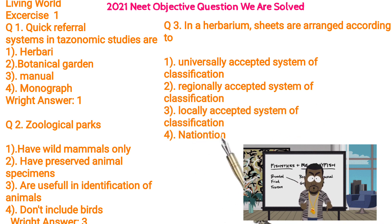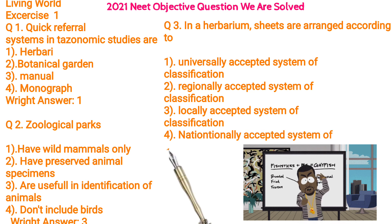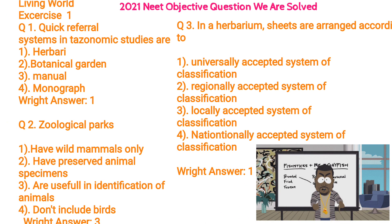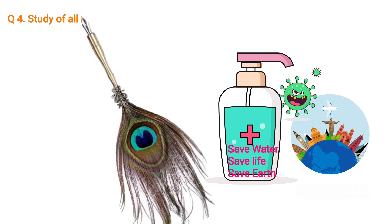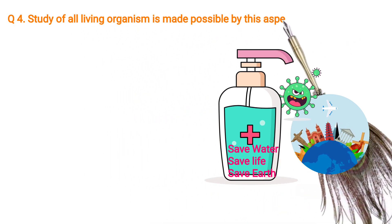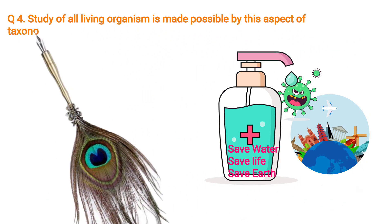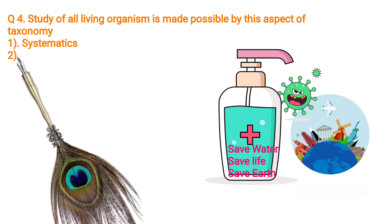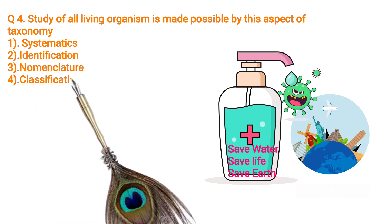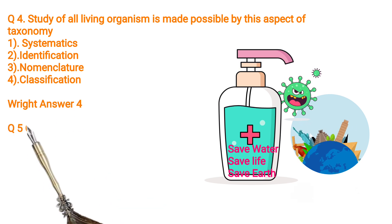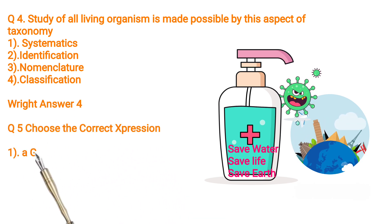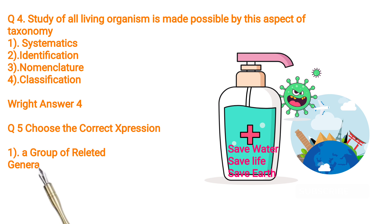4. Nationally accepted system of classification. Right answer: 1. Q4: Study of all living organisms is made possible by this aspect of taxonomy — 1. Systematics. 2. Identification. 3. Nomenclature. 4. Classification.